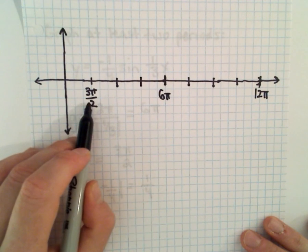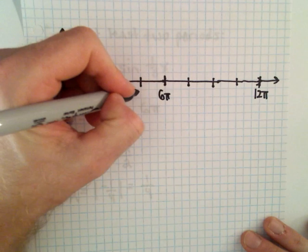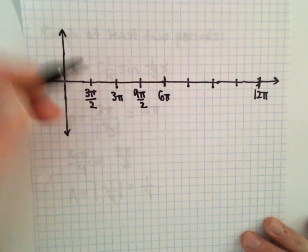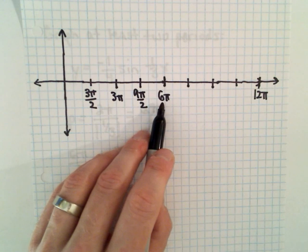So, 3 pi over 2, we'll have 6 pi over 2, 9 pi over 2. 6 pi over 2 would just be 3 pi. Then we would have 12 pi over 2.